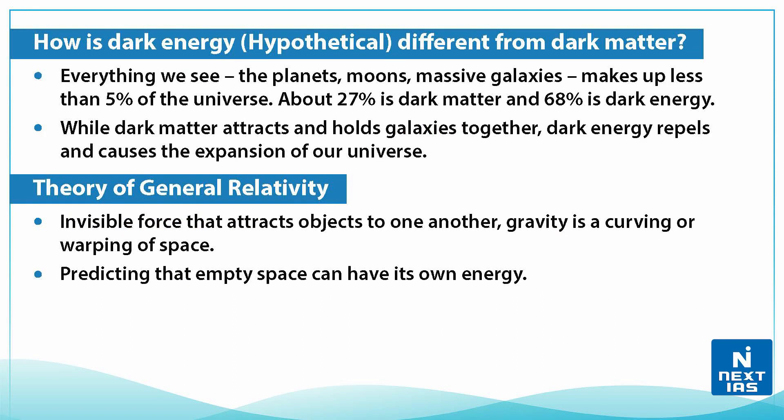Now let us talk about how hypothetical dark energy is different from dark matter. Everything we see — the planets, moons, massive galaxies — makes up less than 5% of the universe. About 27% is dark matter, while 68% is dark energy. While dark matter attracts and holds galaxies together, dark energy repels and causes the expansion of our universe.